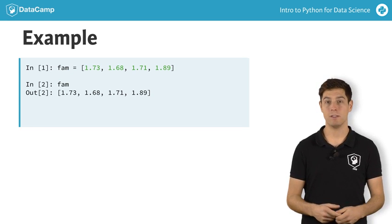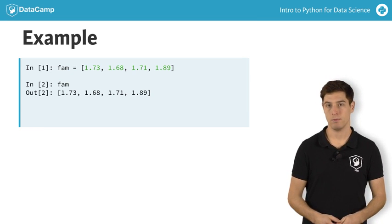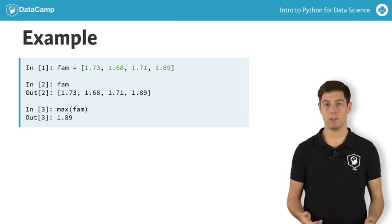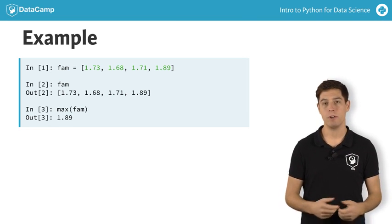This is one of Python's built-in functions, just like type. We simply pass fam to max inside parentheses. The output makes sense, 1.89, the highest number in the list.